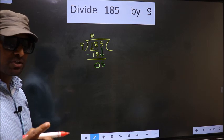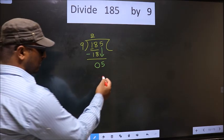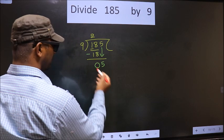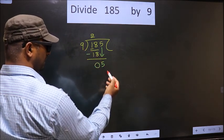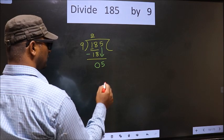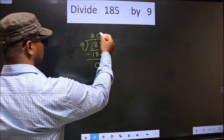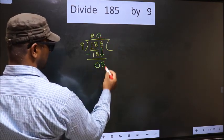Instead, what you should think of is, what number should we write here? If we write 9, that is larger than 5. So what we do is we take 0 here. 9 times 0 is 0.